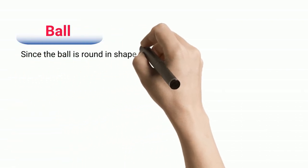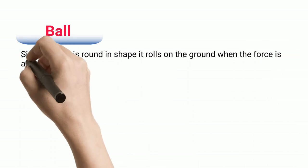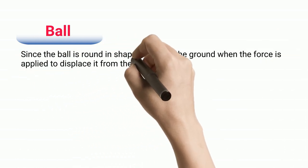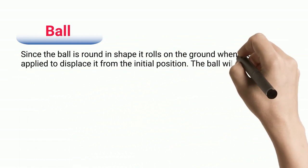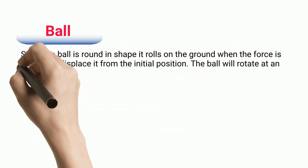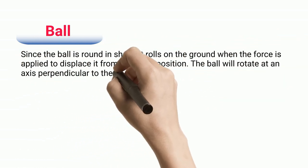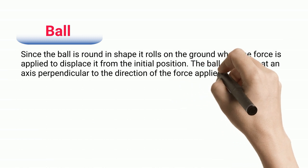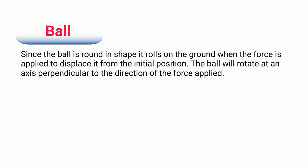Ball. Since the ball is round in shape, it rolls on the ground when force is applied to displace it from the initial position. The ball will rotate at an axis perpendicular to the direction of the force applied.